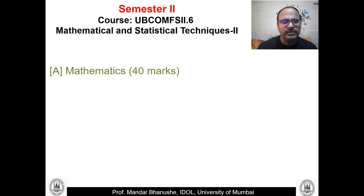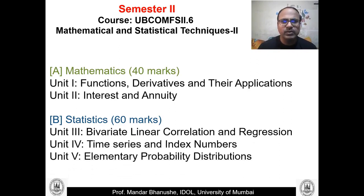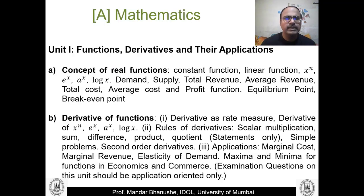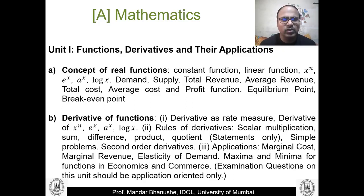In semester two we have the same pattern — Section 1 mathematics and Section 2 statistics, again five units. The first unit is on functions, derivatives, and their applications. We define what a function is, the different types of functions related to commerce and management, then differentiation — derivatives as a rate measure — rules of differentiation, second order derivatives, and applications in commerce and economics such as marginal cost, average cost, and marginal revenue.